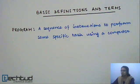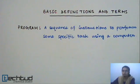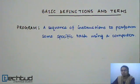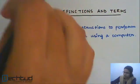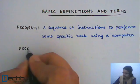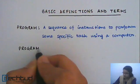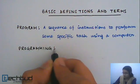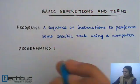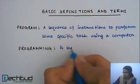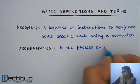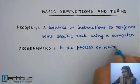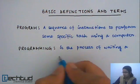Basically, through programming we give instructions to a computer so that it can perform some specific task according to our need. So what is programming? Programming is the process of writing a program.